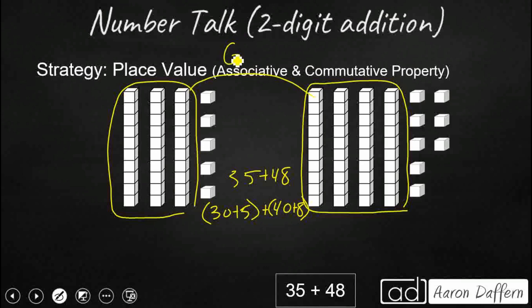Now, in order to do that, we need not only our associative property to regroup it, but we need our commutative property to reorder it because the commutative property says that you can take addends and you can add them in any order. Five plus eight is the same as eight plus five. So I'm going to reorder these. I'm going to bring my 30 and my 40 together. And I'm going to do that right here, 30 and 40. I'm going to add that first. That's 70.